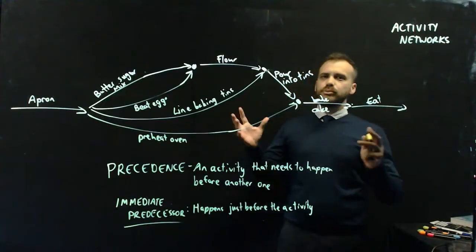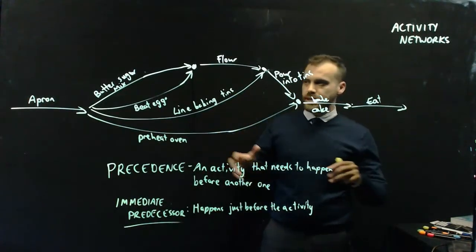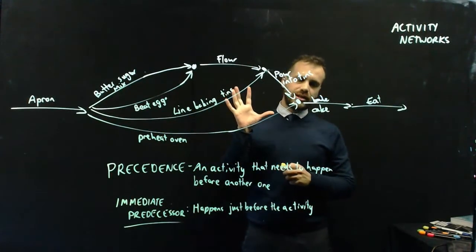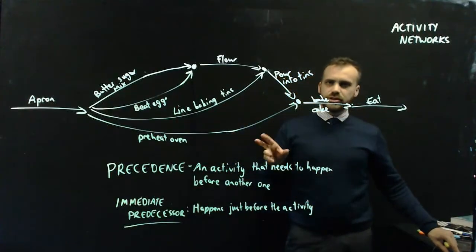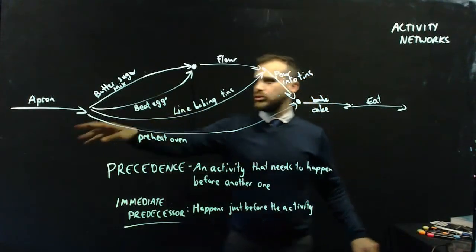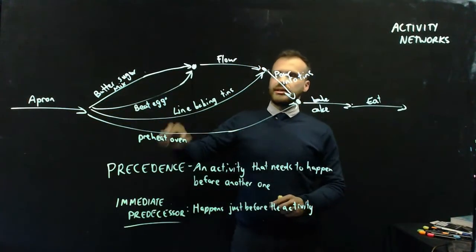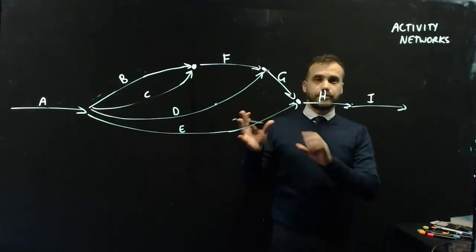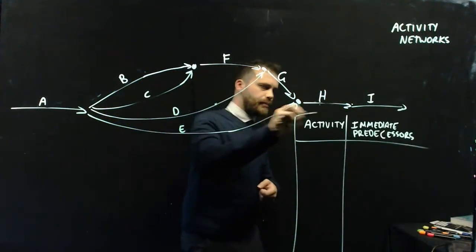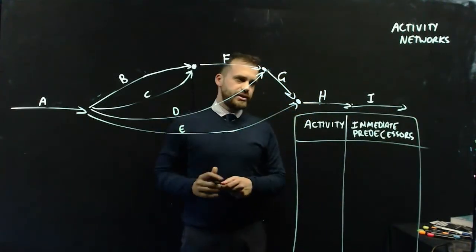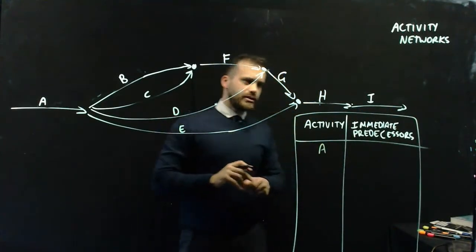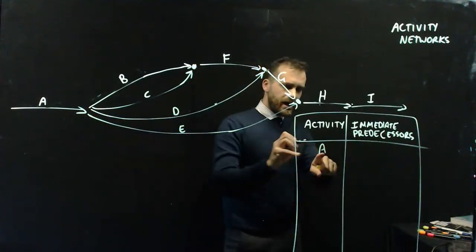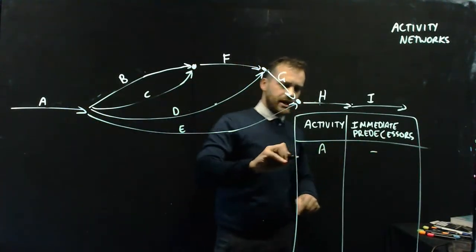In a much more complicated dish, like a MasterChef recipe, this network's going to get really crazy. We could actually interpret this in a table. I'm going to change all of my apron, butter, sugar to letters, A, B, C, D, E, F, G. I'm going to create a table called a precedence table. Let's put in all of our activities. Activity A. Does anything have to happen before A happens? No, A is the first thing to happen. A has no immediate predecessors.